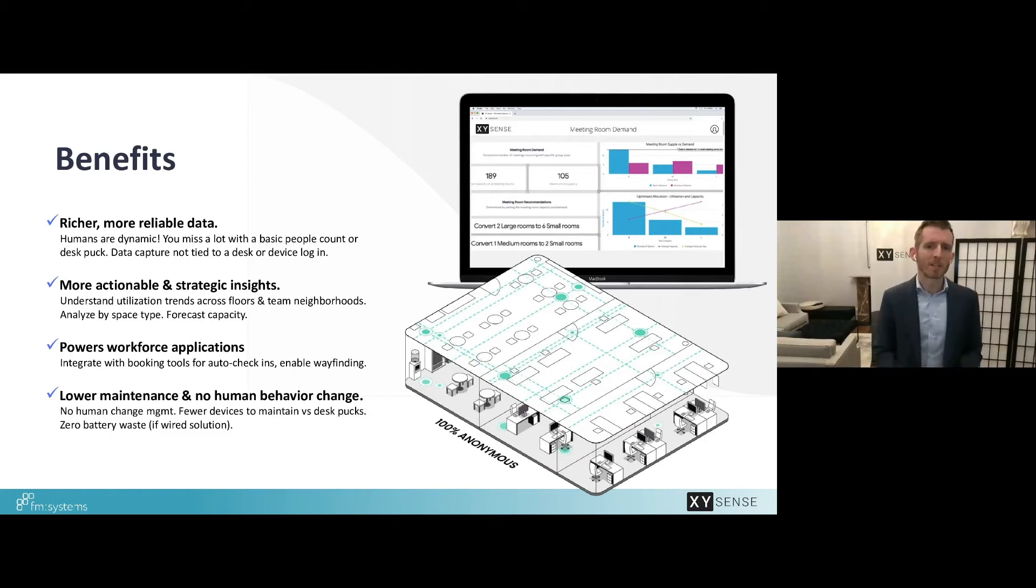With the rich data set of information being captured from area sensors you're actually able to get a more complete picture about overall space usage from soft seating areas all the way through to standard work points. The overall coverage enables tools to fuel new hybrid workplaces understanding neighbourhood and team usage as well as predicting capacity trends.